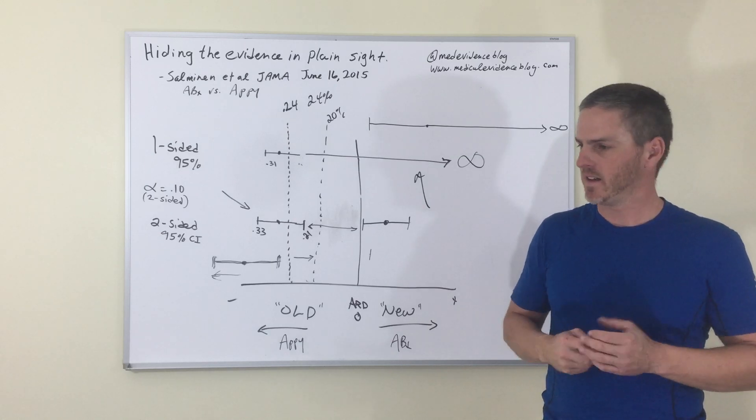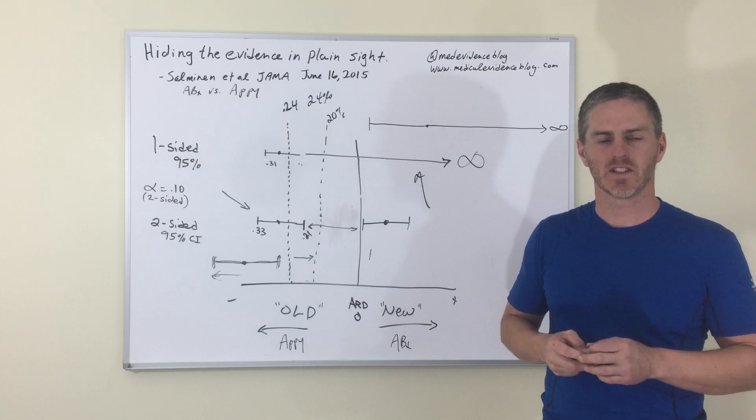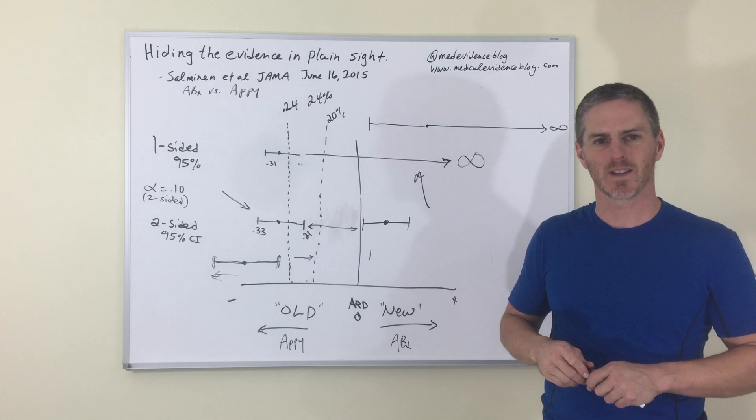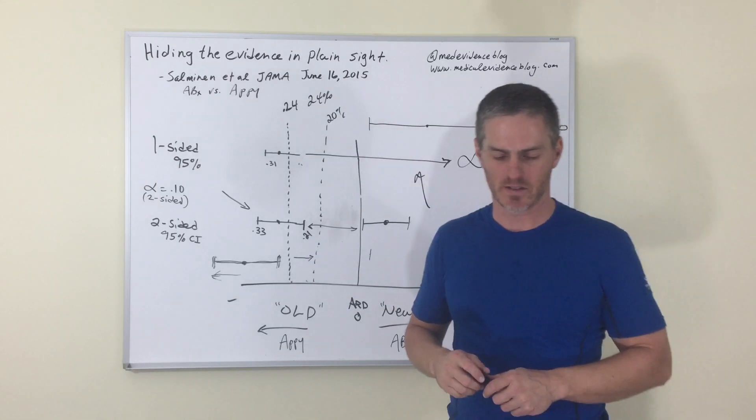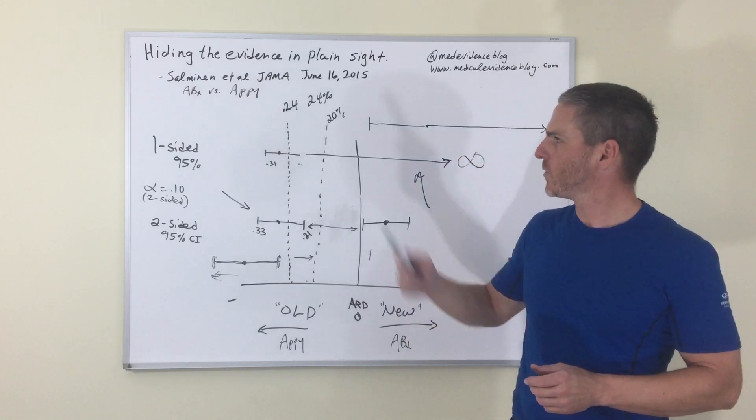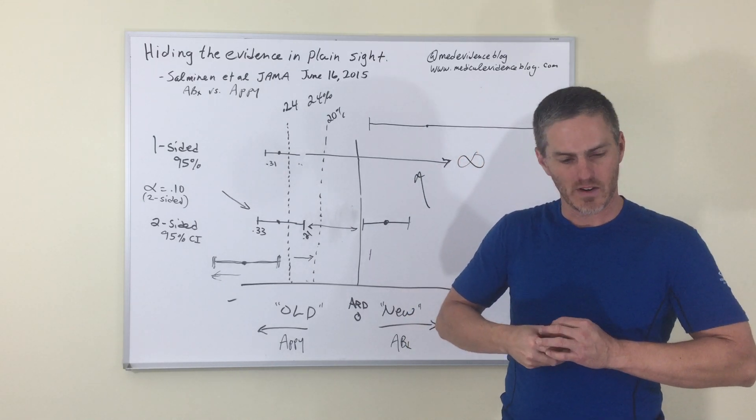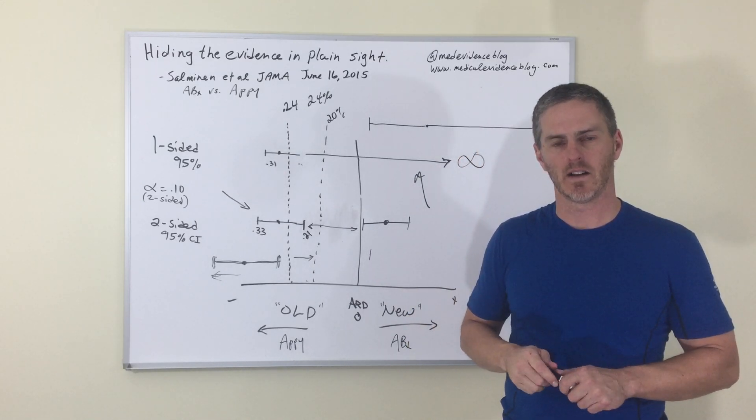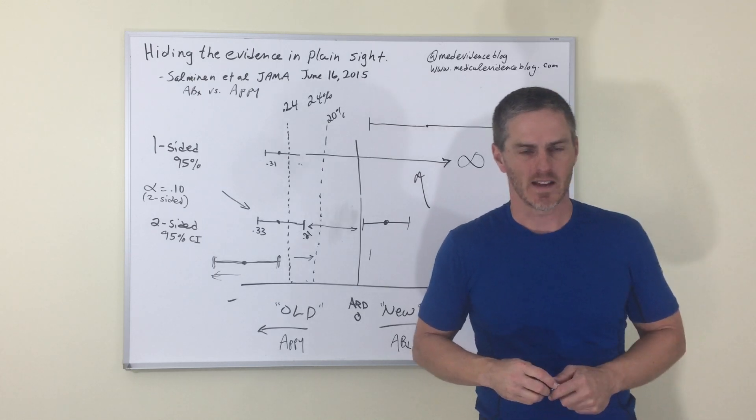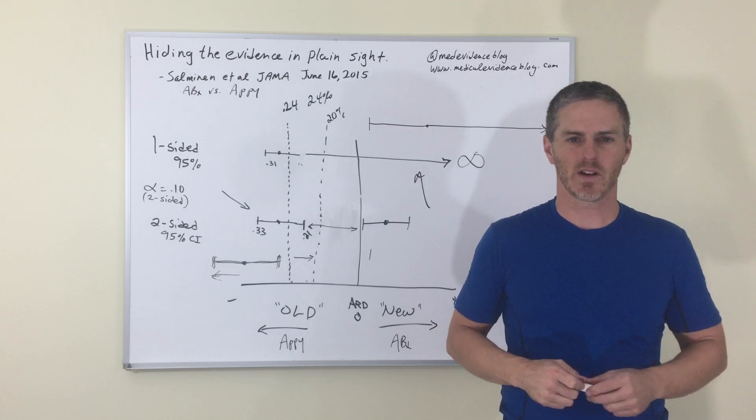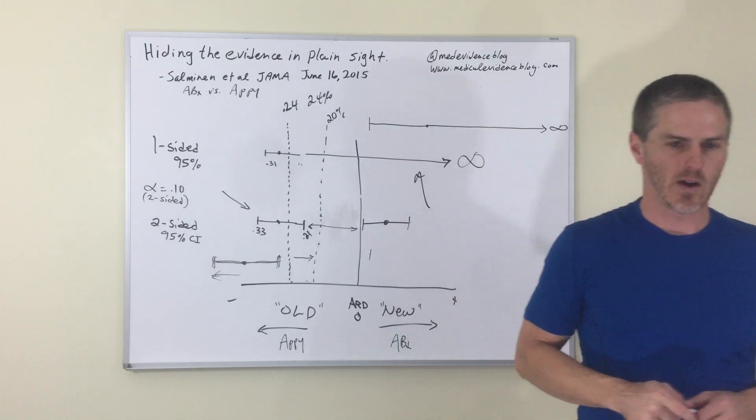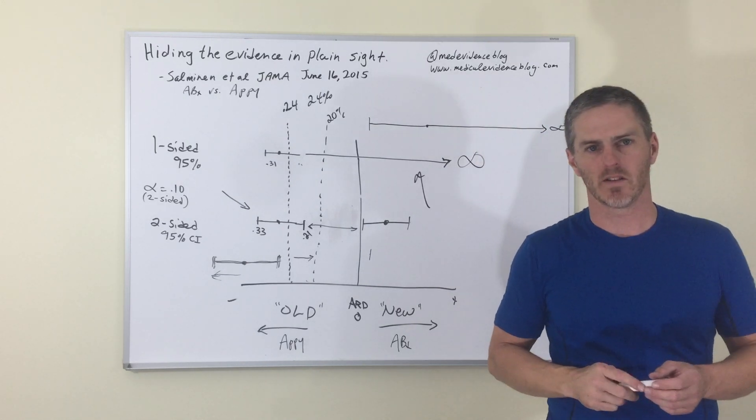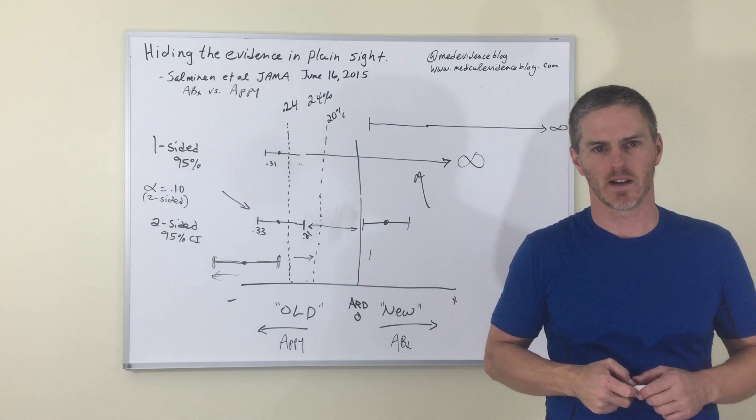That completes my discussion of hiding your evidence in plain sight in the one-sided confidence intervals, using, of course, the very fascinating trial of Salman and et al, as the example. Thank you for joining me. Please follow me on Twitter at MedEvidenceBlog, or on, I can be found on the blog itself, www.medevidenceblog.com. Thanks again.